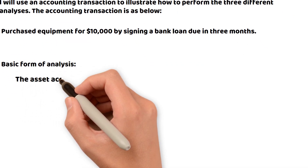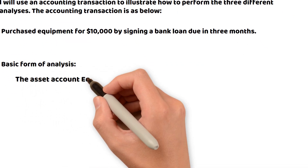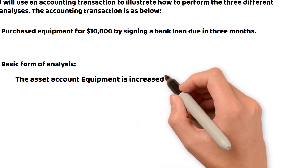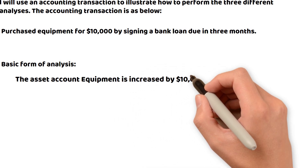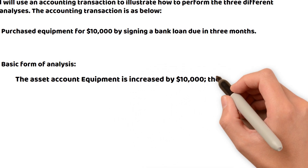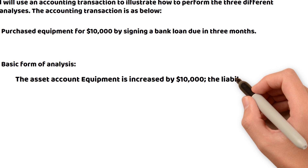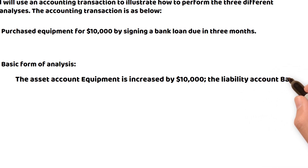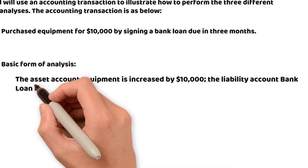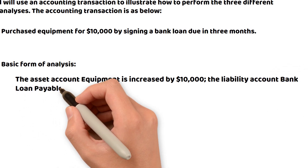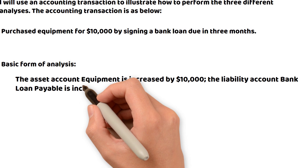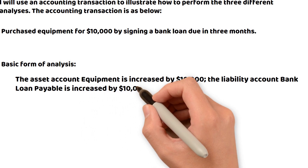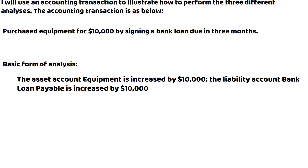This transaction will make the asset account — equipment — increased by ten thousand dollars. The liability account — bank loan payable — is also increased by ten thousand dollars.